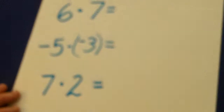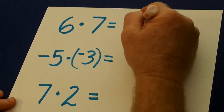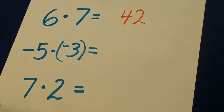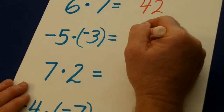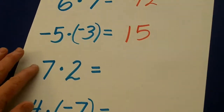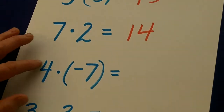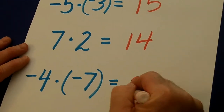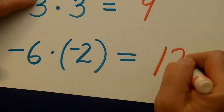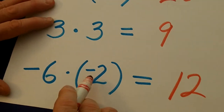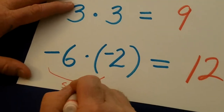Now let's look at these. Positive 6 times positive 7 — the signs are the same, so it's positive 42. The signs are the same — negative times a negative is a positive. 5 times 3 is 15. Positive times a positive is a positive. Negative times a negative — signs are the same — it's a positive. 3 times 3 is 9. 6 times 2 is 12, and since it's negative times a negative, it's going to be positive, because those two signs are the same.